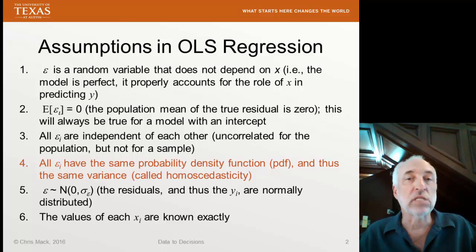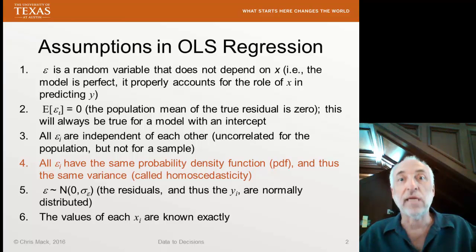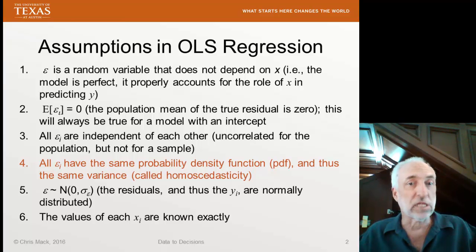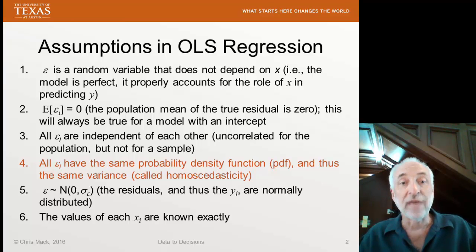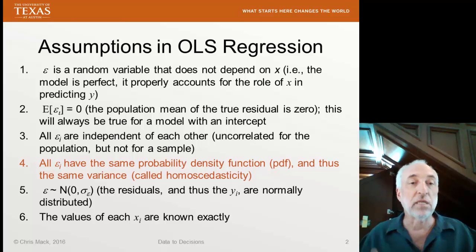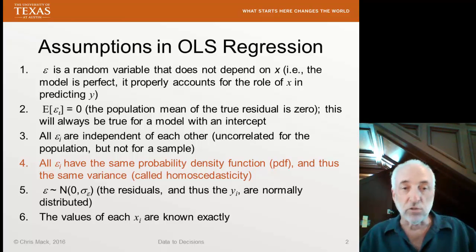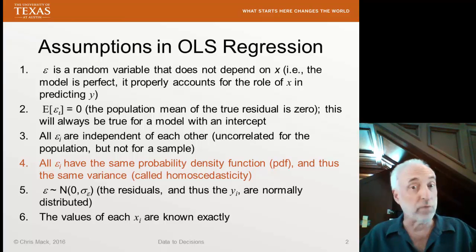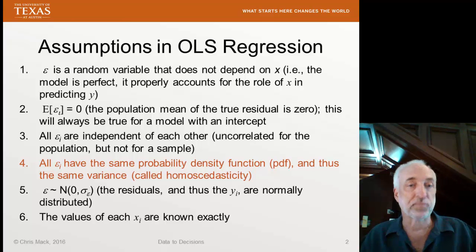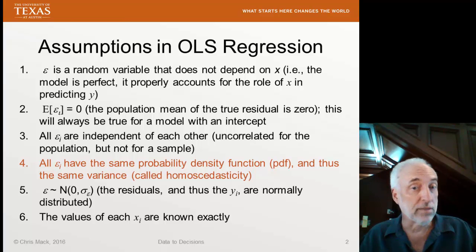Recall that we have quite a few assumptions used in ordinary least squares regression. If these assumptions are met, then the estimates we get are the best linear, unbiased estimates possible. One assumption is that all residuals have the same probability density function — meaning the same variance — which we call homoscedasticity. When that assumption is violated and variance changes from data point to data point, that's called heteroscedasticity.